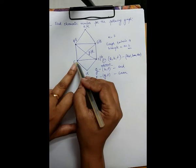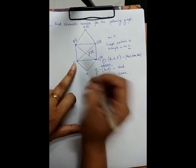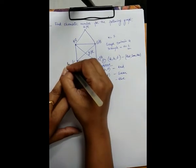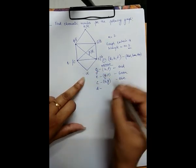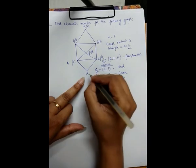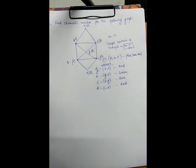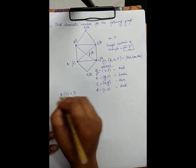Next, consider vertex C: C is adjacent to B and G, so I cannot use green or red, but I can use blue. So C is painted blue. Finally, vertex D: D is adjacent to C and E, so I cannot use blue or green, but I can use red. So D is painted red. We conclude that using 3 colors — red, green, and blue — we can paint all vertices of this graph properly. Therefore, for this particular graph also, the chromatic number is equal to 3.